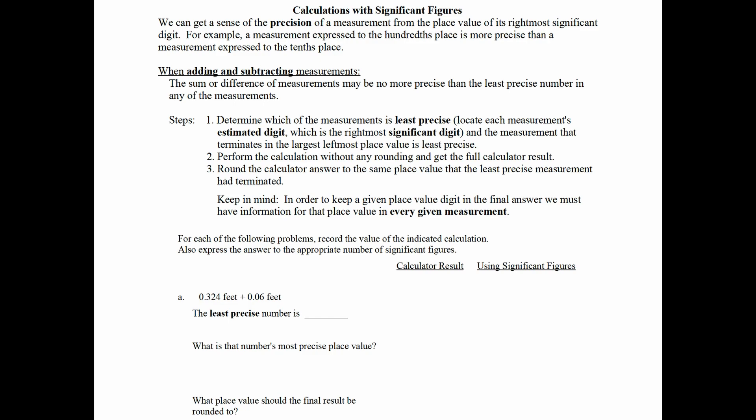Sometimes we're going to want to do calculations with significant figures. We can get a sense of the precision of a measurement from the place value of its rightmost significant digit. For example, a measurement expressed to the hundredths place is more precise than a measurement expressed to the tenths place. Now there's different rules for addition and subtraction versus multiplication and division. First, determine which of the measurements is least precise. To do this, we want to locate each measurement's estimated digit, which is the rightmost significant digit that it has. And the measurement that terminates in the largest leftmost place value is least precise.